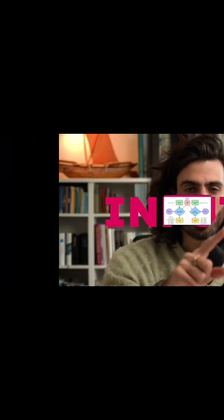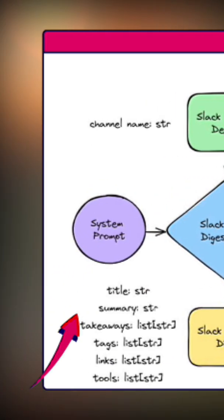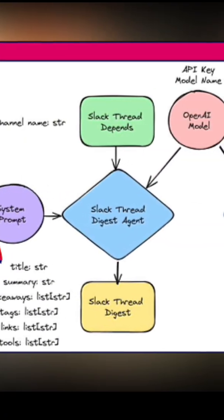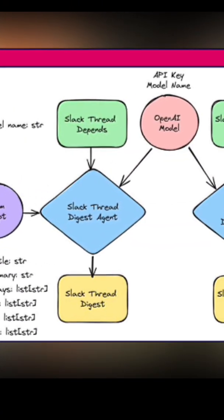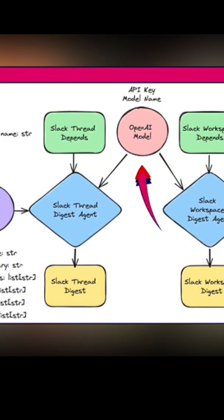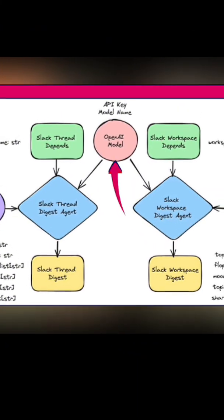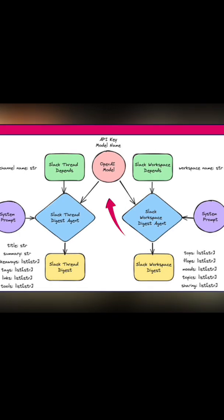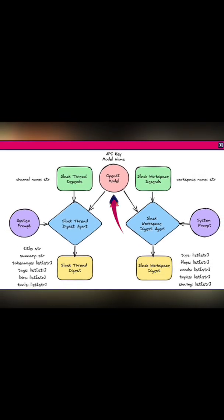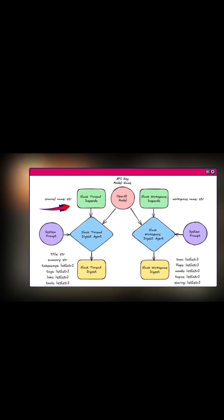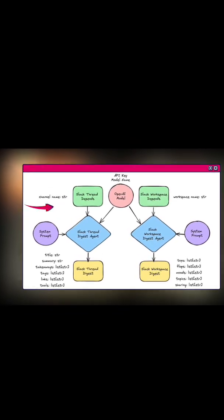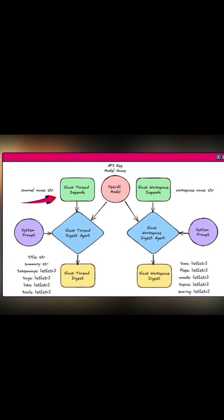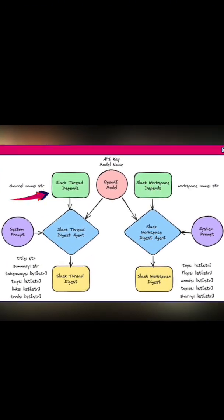Inputs. We feed the system a system prompt — basically what we want it to do. We also provide the API key and model name of the AI we're going to be using. We will use additional context as dependencies such as the name of the Slack thread and the workspace being processed.